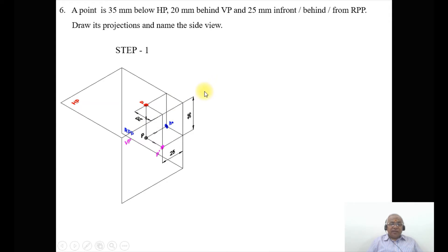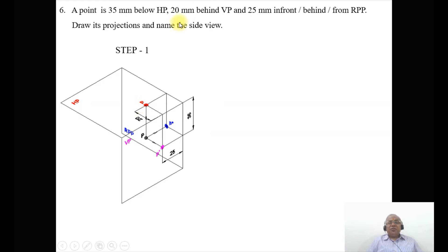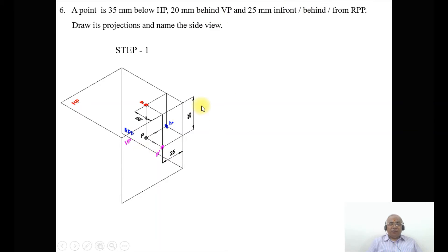Looking from the right side view, the object is behind RPP. Looking from the front view, the object is below HP. Looking from the top view, the object is behind VP. So we must always satisfy the condition of the vertical plane. Since it is behind VP, it should obviously also be behind RPP.